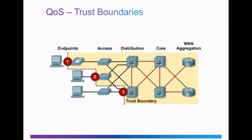QoS marking happens at trust boundaries, and marking should happen as close to the source as possible. Endpoints like Voice over IP phones, wireless access points, and video conferencing gateways have the ability to mark QoS packets, as indicated in number 1. Traffic can also be marked using Layer 2 switches, as in number 2, or at Layer 3 using Layer 3 switches and routers. As packets travel across the network, the remarking of traffic can be necessary — remarking of Class of Service values, IP Precedence values, or DSCP values.